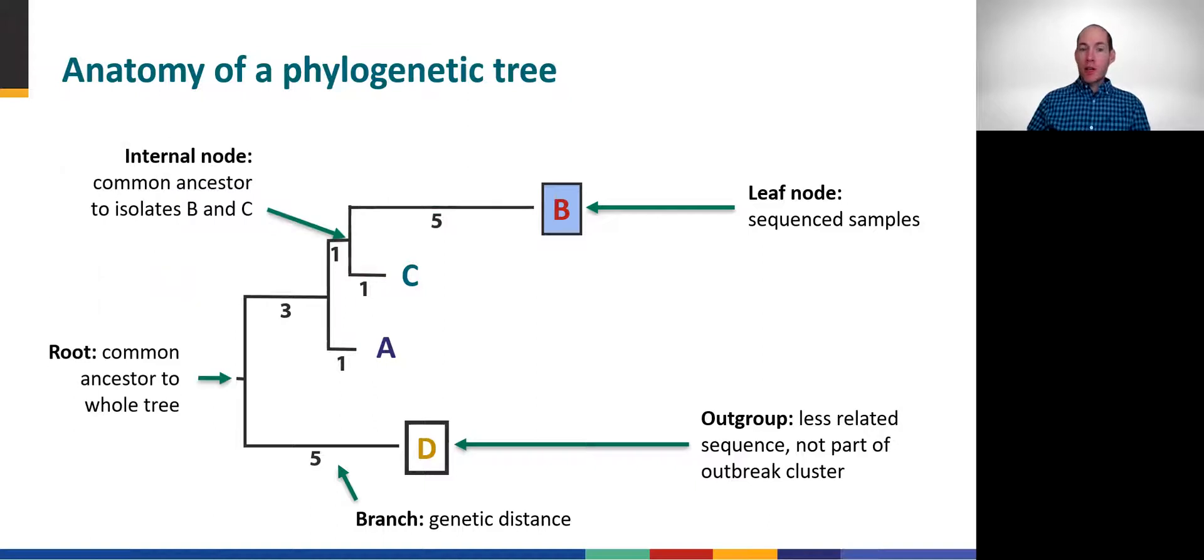This example tree also has internal nodes. These are inferred ancestral sequences that we have not sampled and are not part of our MSA. But our phylogenetic software algorithm tries to make educated guesses about them based on the leaf node sequences. Internal nodes represent the common ancestor for all other nodes to their right. Thus, the labeled internal node in our tree is the inferred common ancestor of isolates B and C. The far left node is a special internal node called the root, which is the common ancestor to all other nodes in the tree.